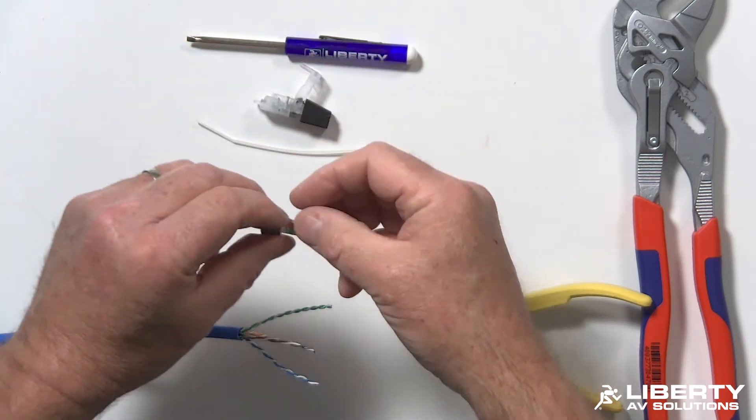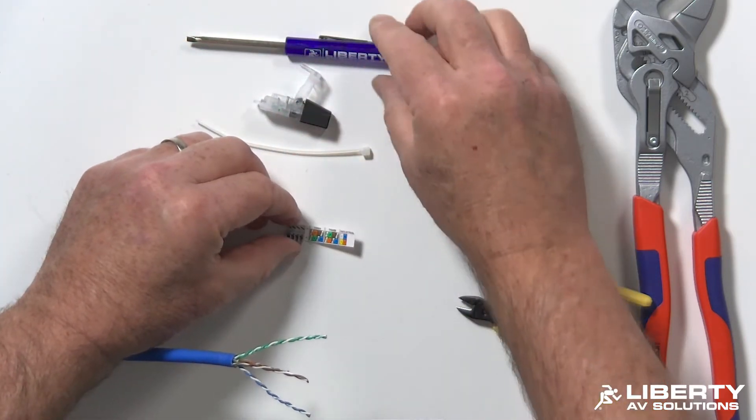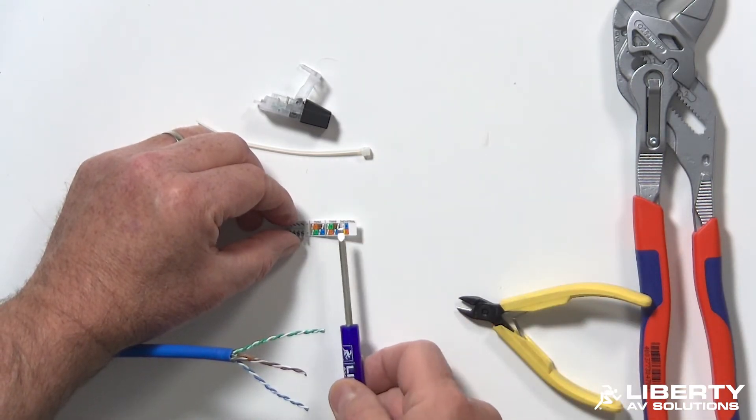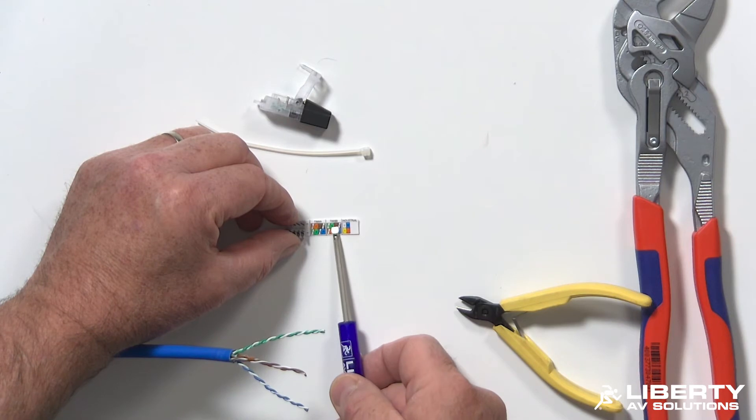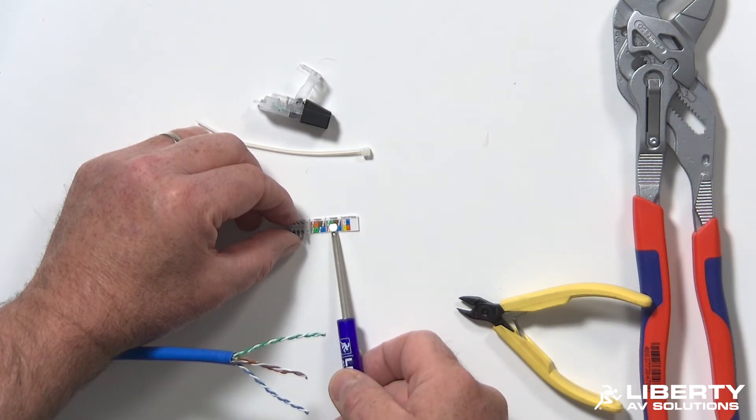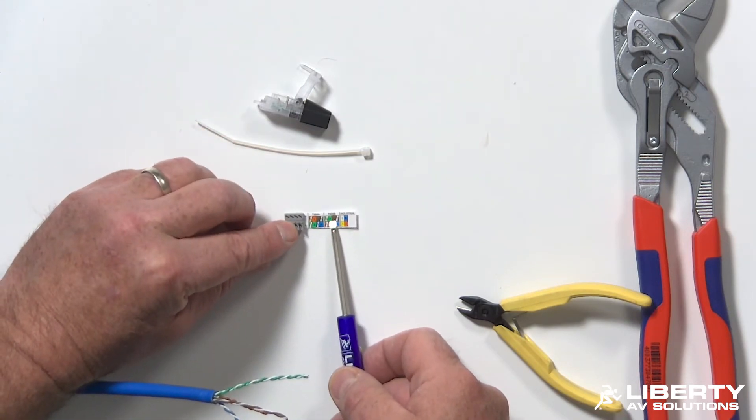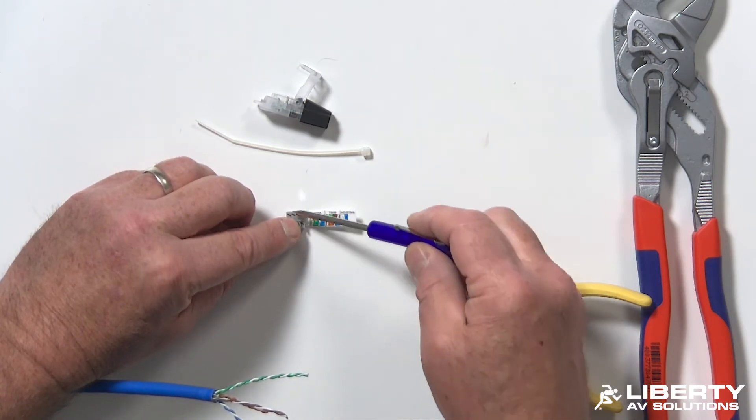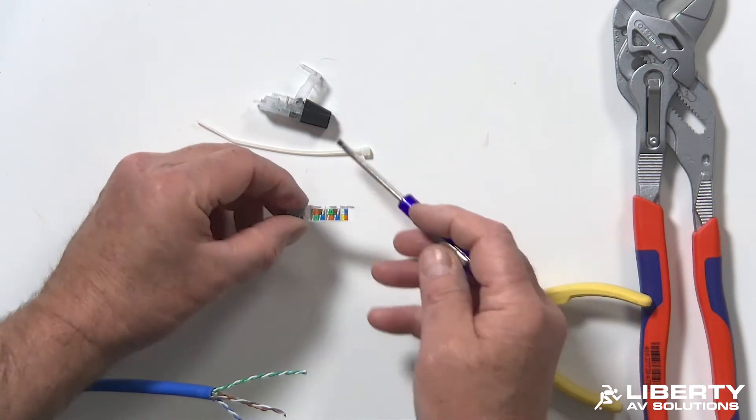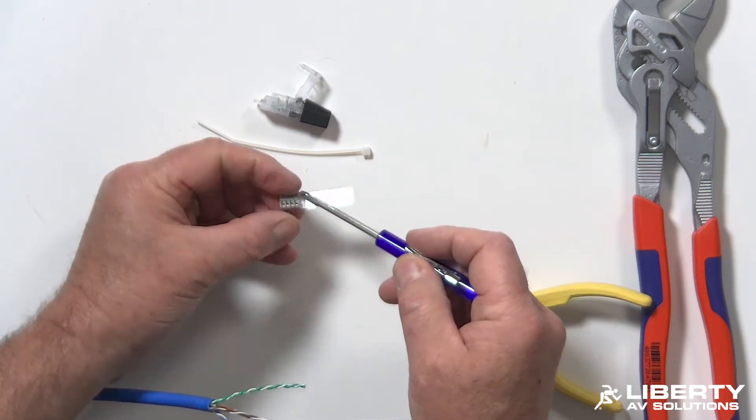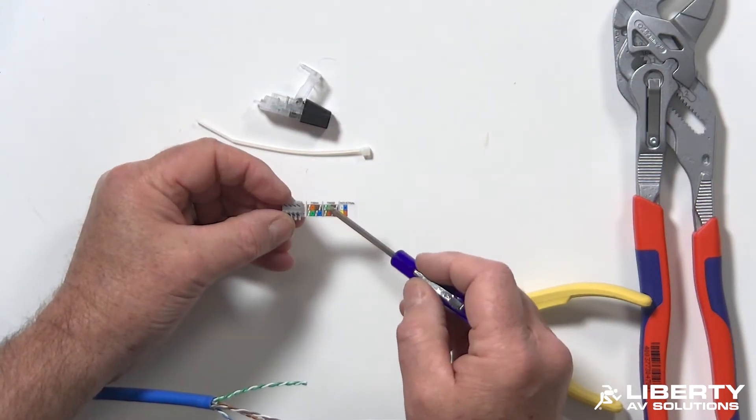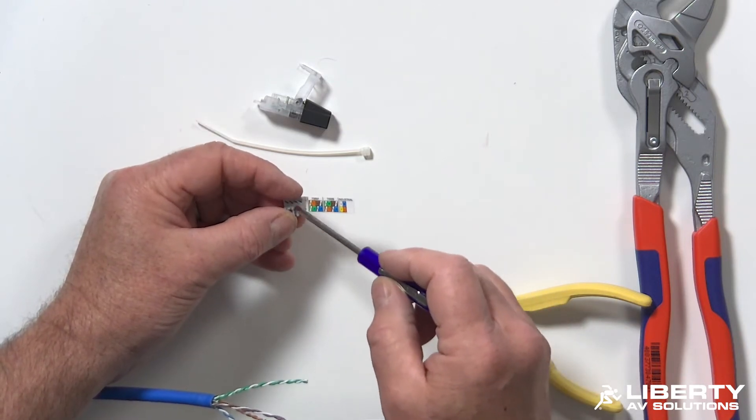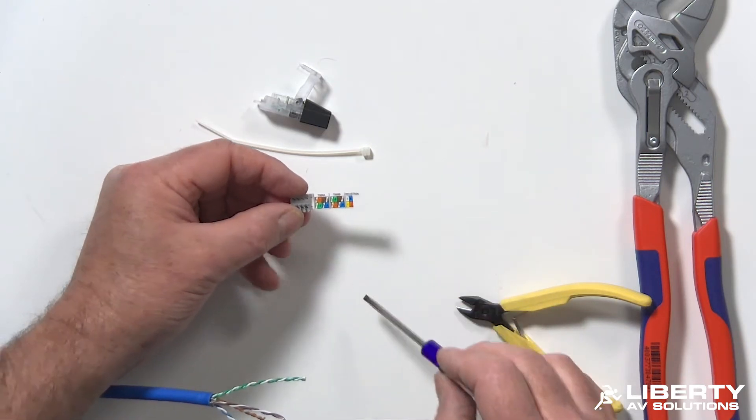Now the load bar of this connector has different codes. You have 568A, 568B, and industrial. We're going to be doing 568B, which is the most common one used for data. Now we want to be cautious here because the green and the brown are the bottom pair here that go in this row here. So they're the ones that go in the holes. You'll be sliding these in the holes down here, the bottom row. Some people do get this mixed up, but bottom row is the anchor pair, green and brown, and then the top row is going to be the orange and blue.